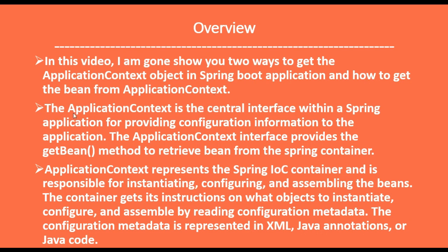The ApplicationContext is a central interface within a Spring application for providing configuration information. The ApplicationContext interface provides a getBean method to retrieve a bean from the Spring container. It represents the Spring IoC container and is responsible for instantiating, configuring, and assembling the beans. The container gets its instructions by reading configuration metadata, represented in XML-based, Java annotation-based, or Java-based configuration.